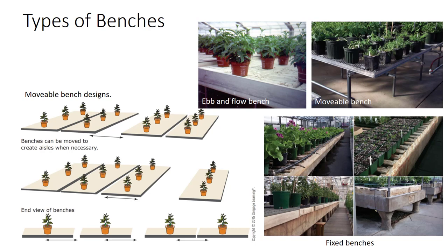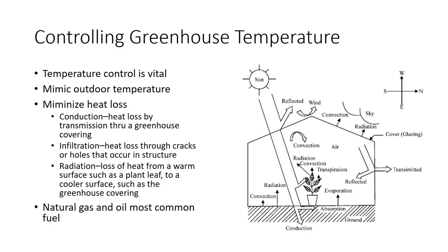Movable benches allow the grower to change the bench arrangement as needed and are popular in container production enterprises. To maximize space, movable benches are used with one central aisle. The benches are close together except when work is being done. When work is completed, the bench is moved to permit enough space for the worker to complete the operation on the next bench. After properly orienting the greenhouse range and benches, selecting a proper system for controlling greenhouse temperatures is the next step.